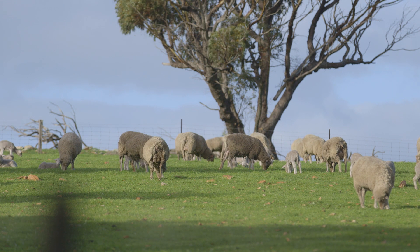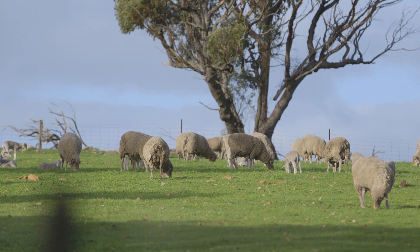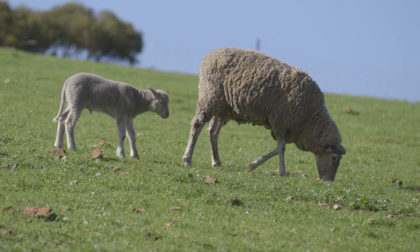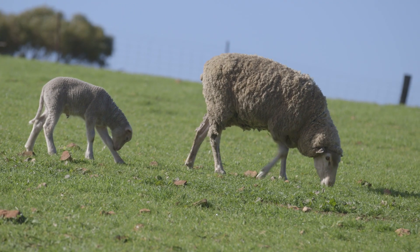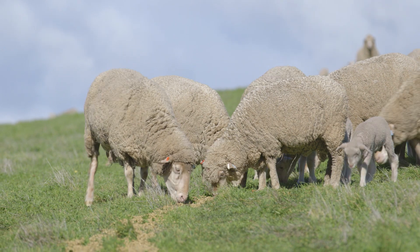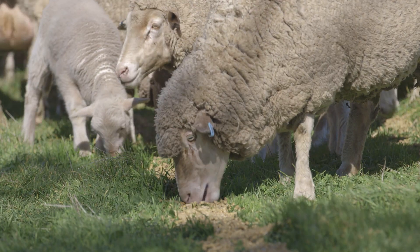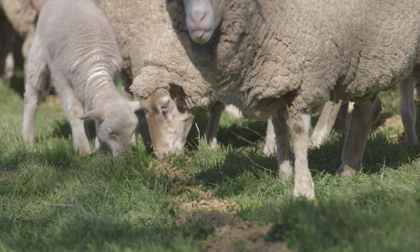We now know that the ewe will be losing weight on pasture alone, so we need to work out the rate of supplementary feed to stop them losing weight. Grains can vary considerably in their energy content, so it's advisable to have your feed tested to give you a clearer idea. However, you can use this table to get an approximate for the grain type you intend on feeding. We'll use lupins for this example at 13.1 megajoules of metabolisable energy per kilogram of dry matter.